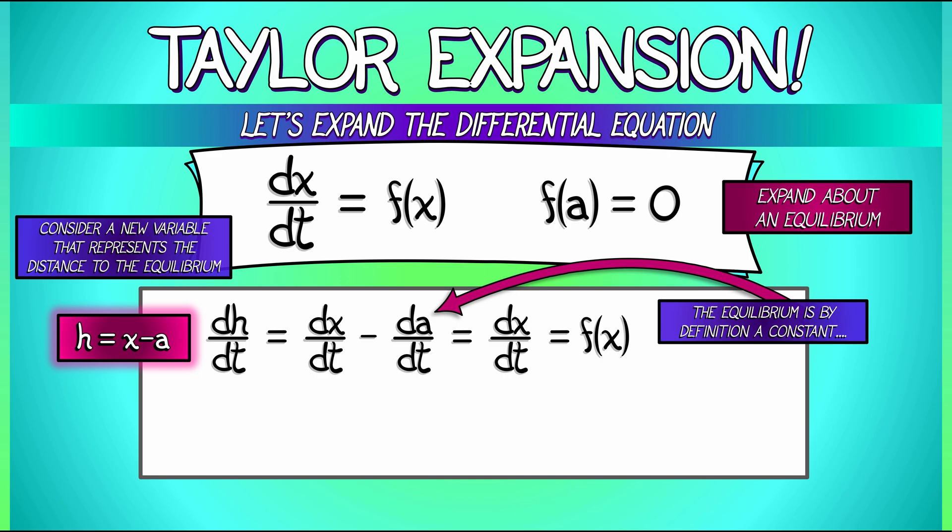Let's Taylor expand about x equals a. f of x equals f of a plus the derivative of f with respect to x evaluated at a times h plus for small values of h. Everything else is in big O of h squared.